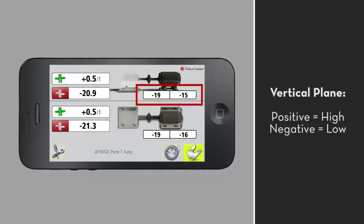In the vertical plane, positive values mean that the movable machine is sitting high and negative values mean it's sitting low.